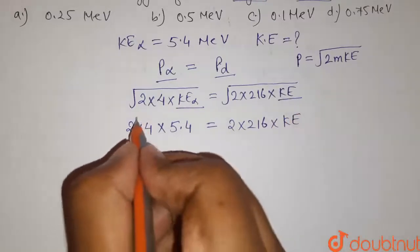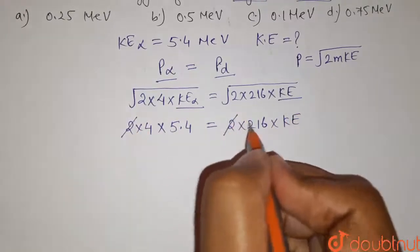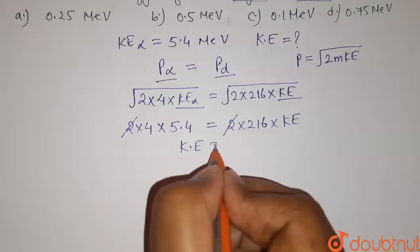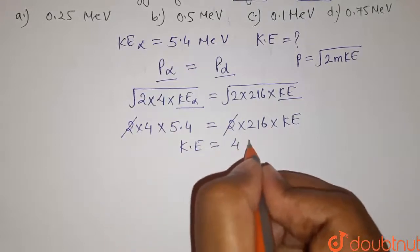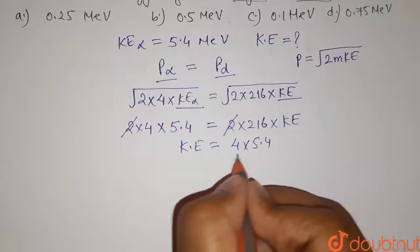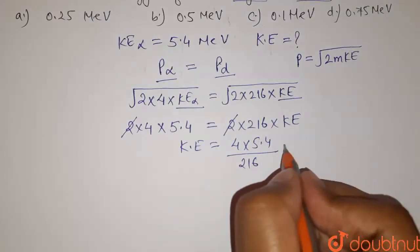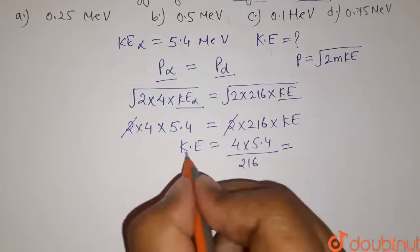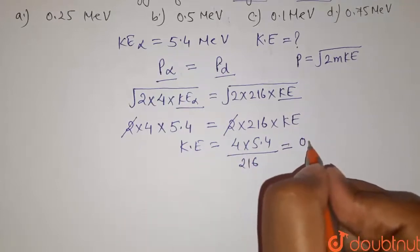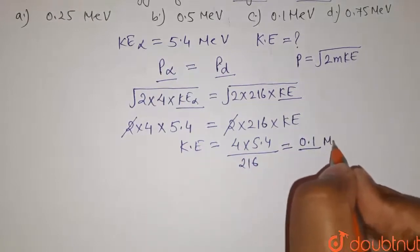So here 2 and 2 will cancel out, and kinetic energy of daughter nuclei will be equals to 4 times 5.4 divided by 216. So on calculating this, the value of kinetic energy equals 0.1 mega electron volts.